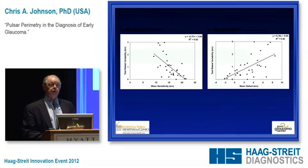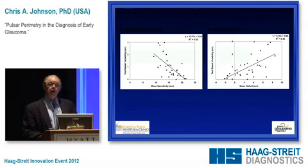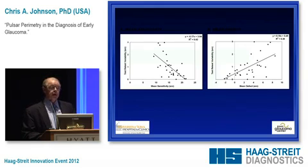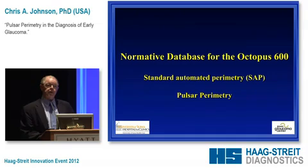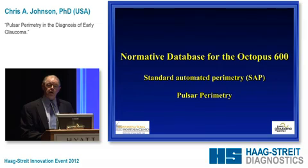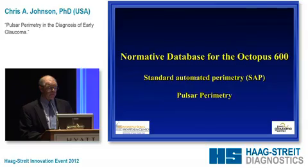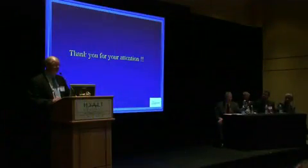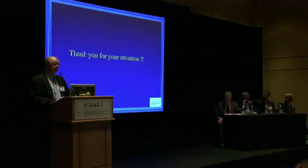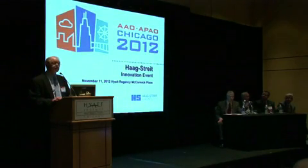I think this is a new technology that's quite desirable. We are now developing a normative database for the Octopus 600 with multiple centers and comparing it to standard automated perimetry and Pulsar Perimetry. The Octopus 600 has all the features of the Octopus 900 plus Pulsar Perimetry, and I think this is a very useful approach. With that, I thank you for your attention and will open it up for questions.